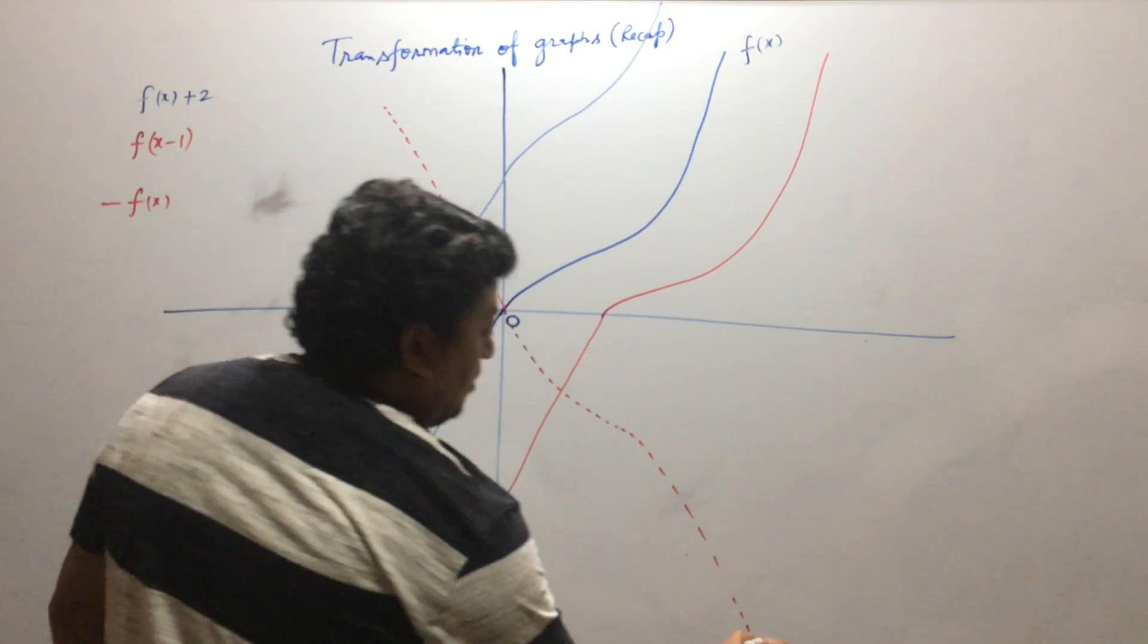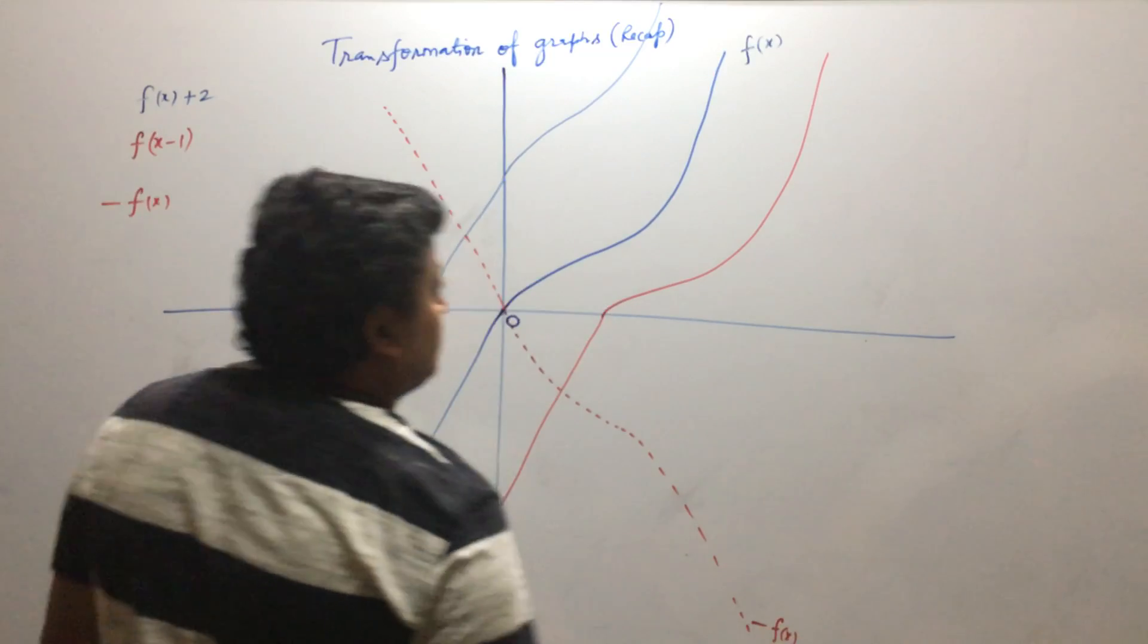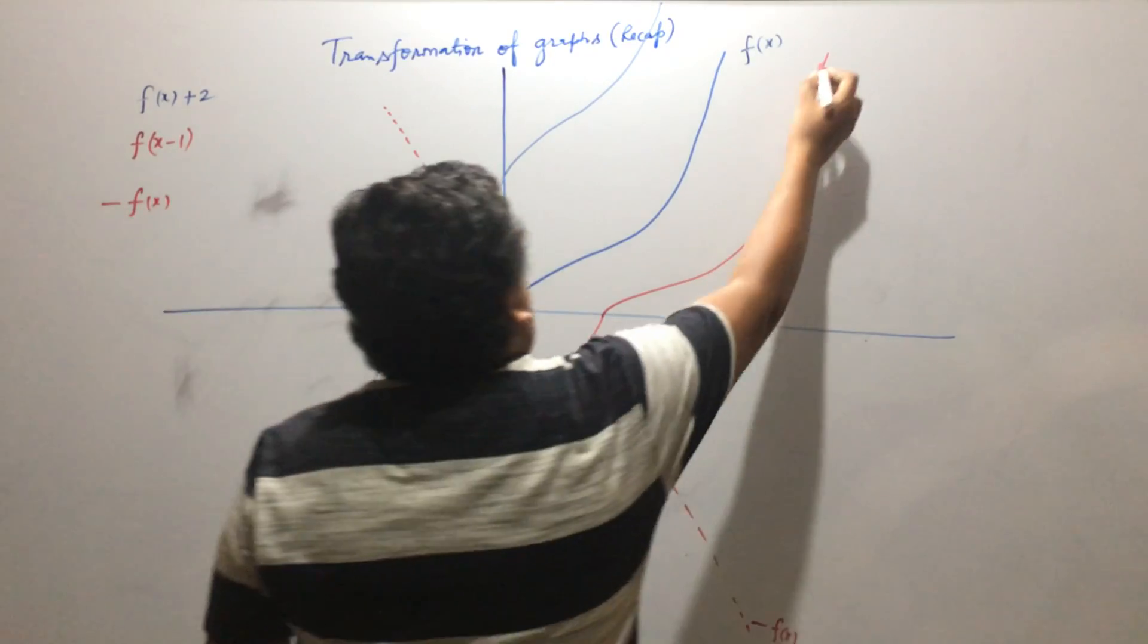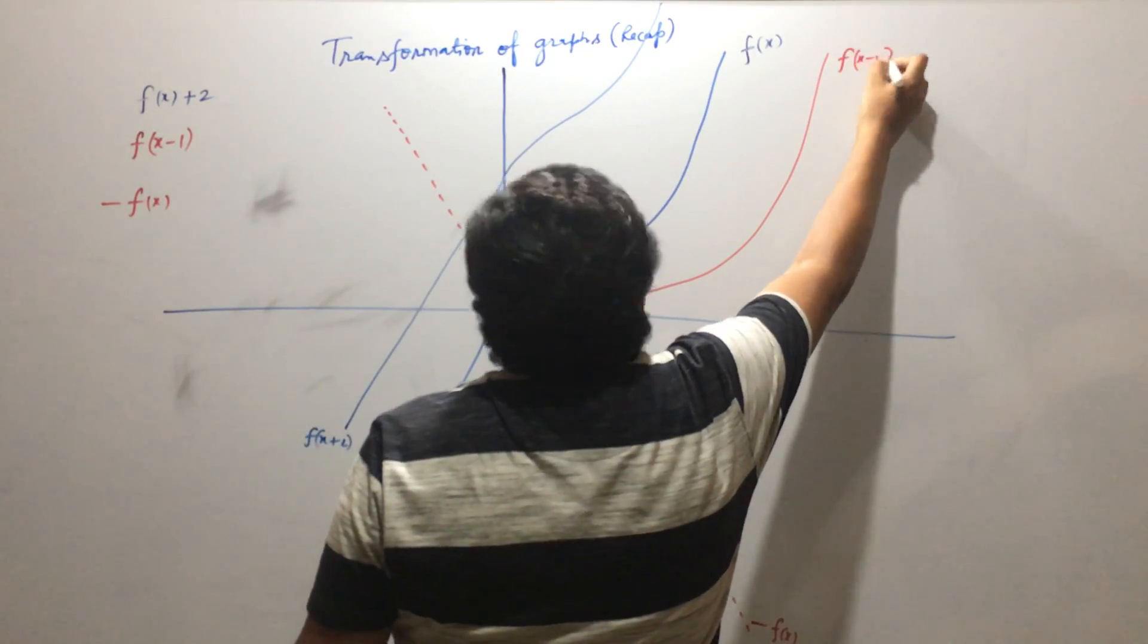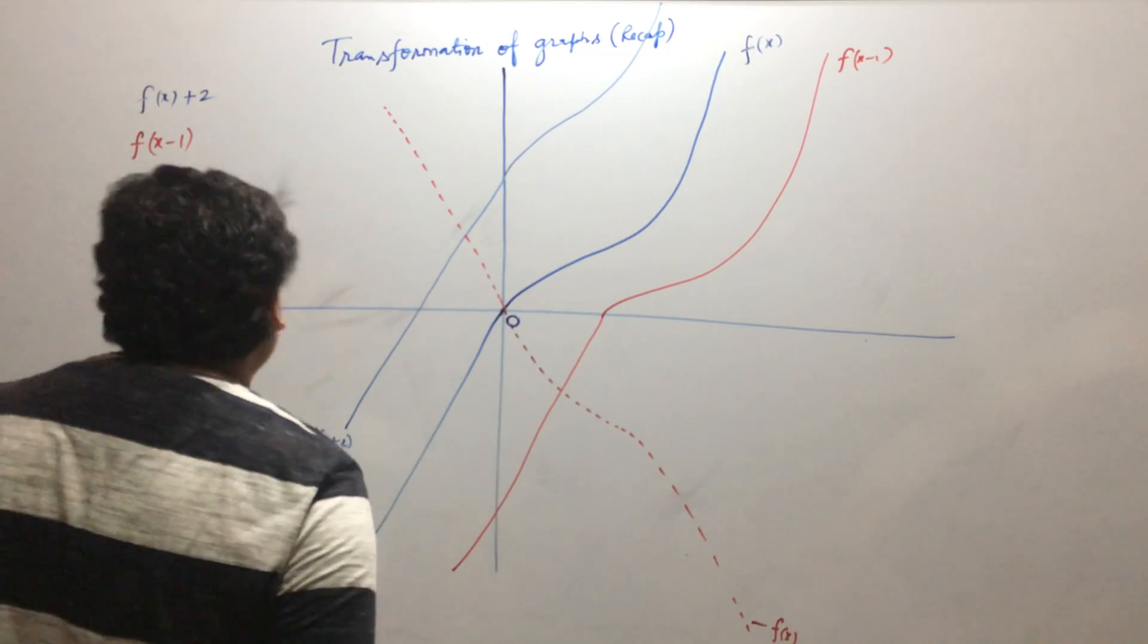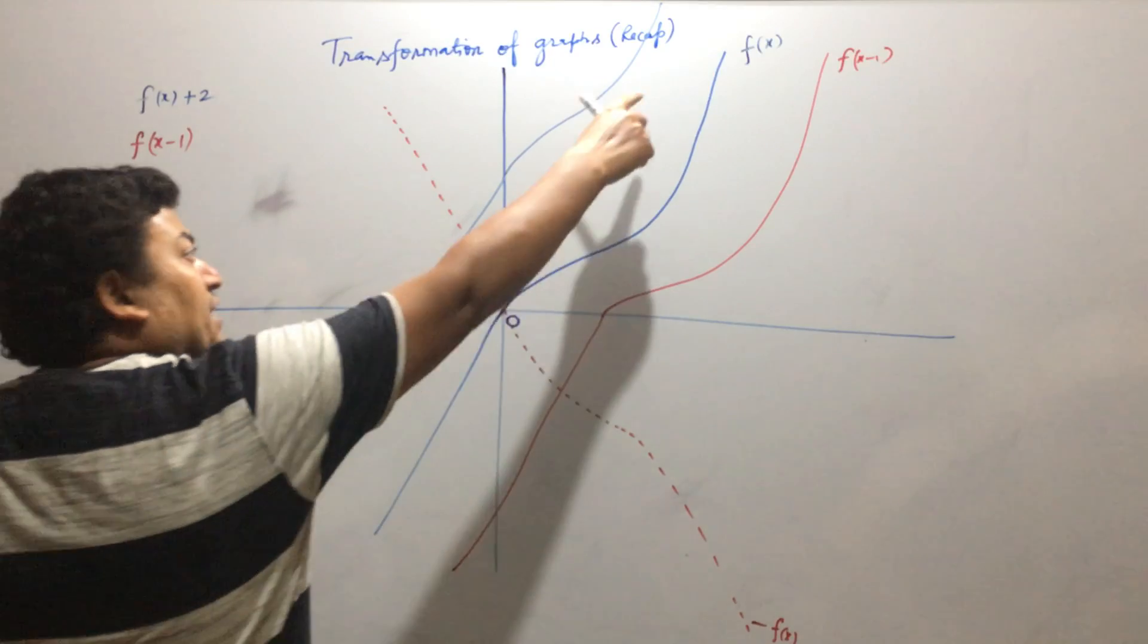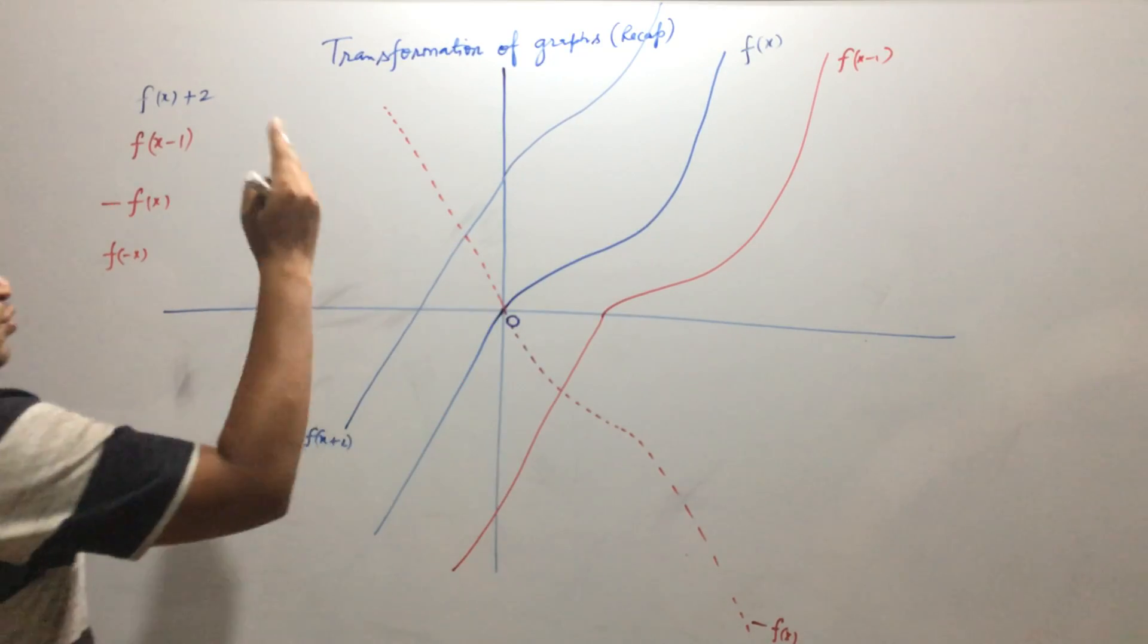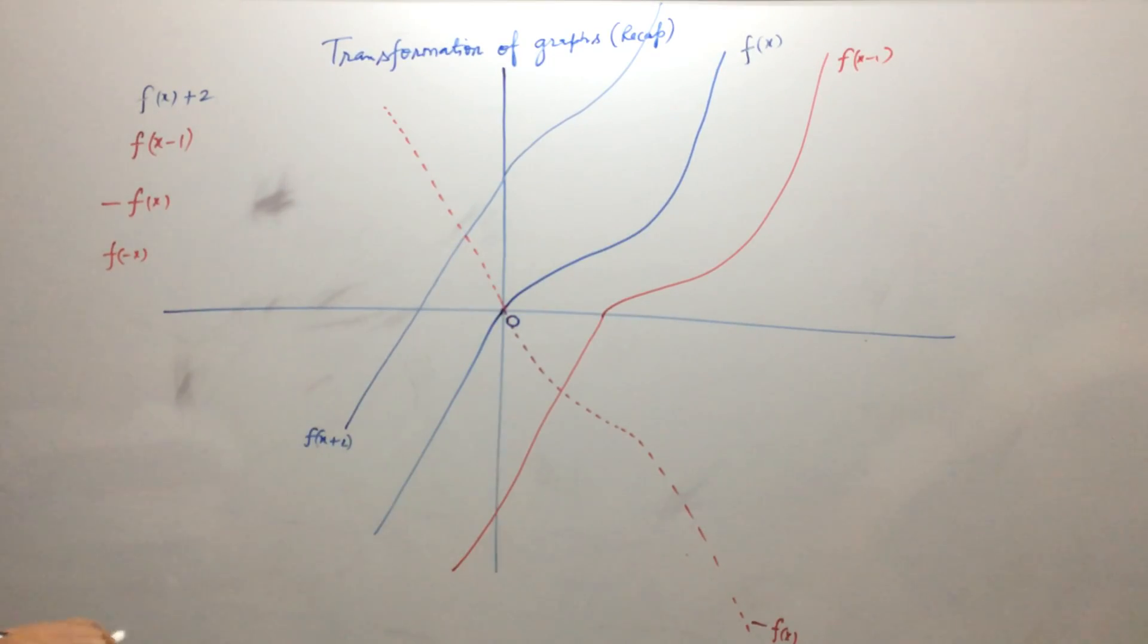So this will be minus f. This was f. Suppose we could draw f of minus x. f of minus x can be obtained by taking the mirror image with respect to y-axis.